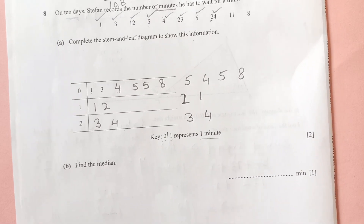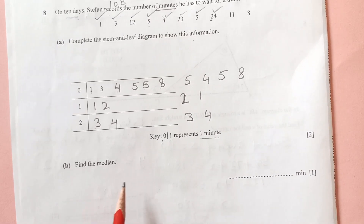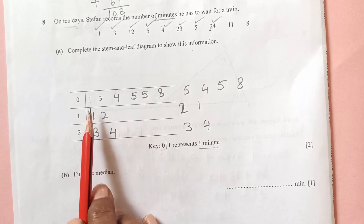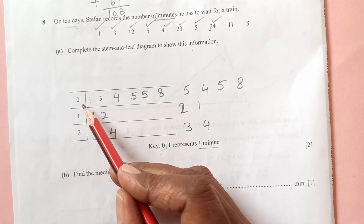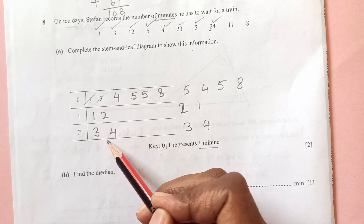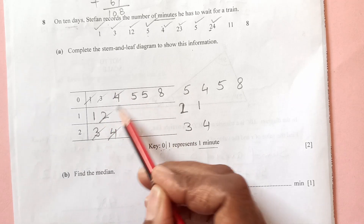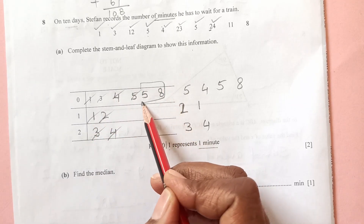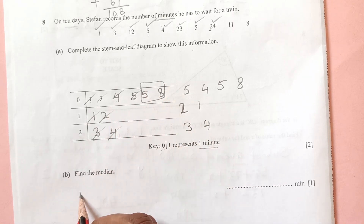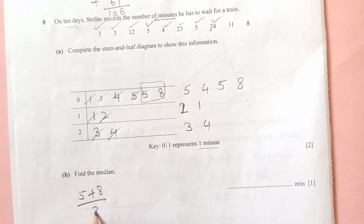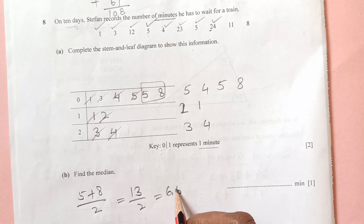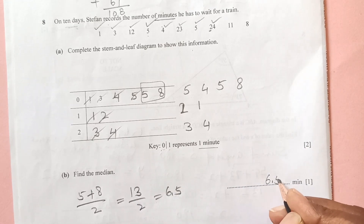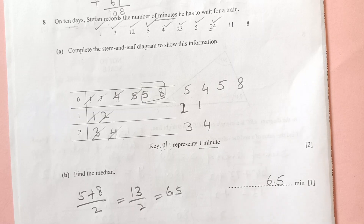Find the median. Since data is in order, cross off values from each end. We're left with two middle values: 5 and 8. The median is (5 + 8) / 2 = 13 / 2 = 6.5 minutes.